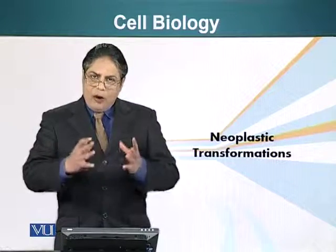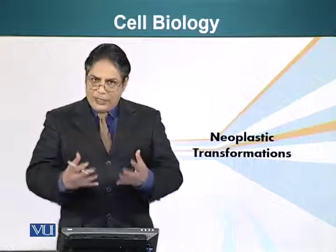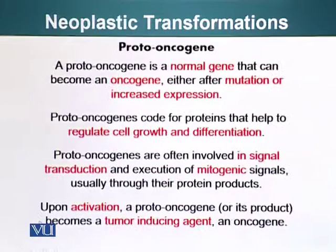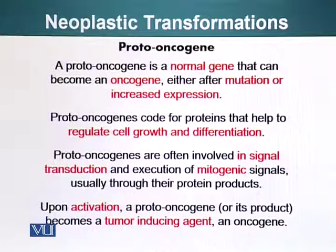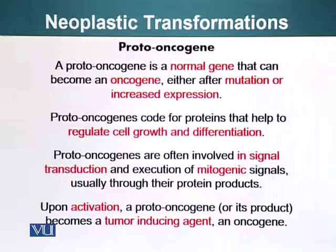Today we are going to see how cancers form and what are the molecular and cellular basis of the formation of cancer. First of all, I would like to introduce you to a special class of genes: proto-oncogenes. Proto-oncogenes are actually normal genes that become oncogenes either after a mutation or increased expression. An oncogene is basically a gene whose product can cause cancerous changes in the cell. Before an oncogene becomes an oncogene, it is called a proto-oncogene.